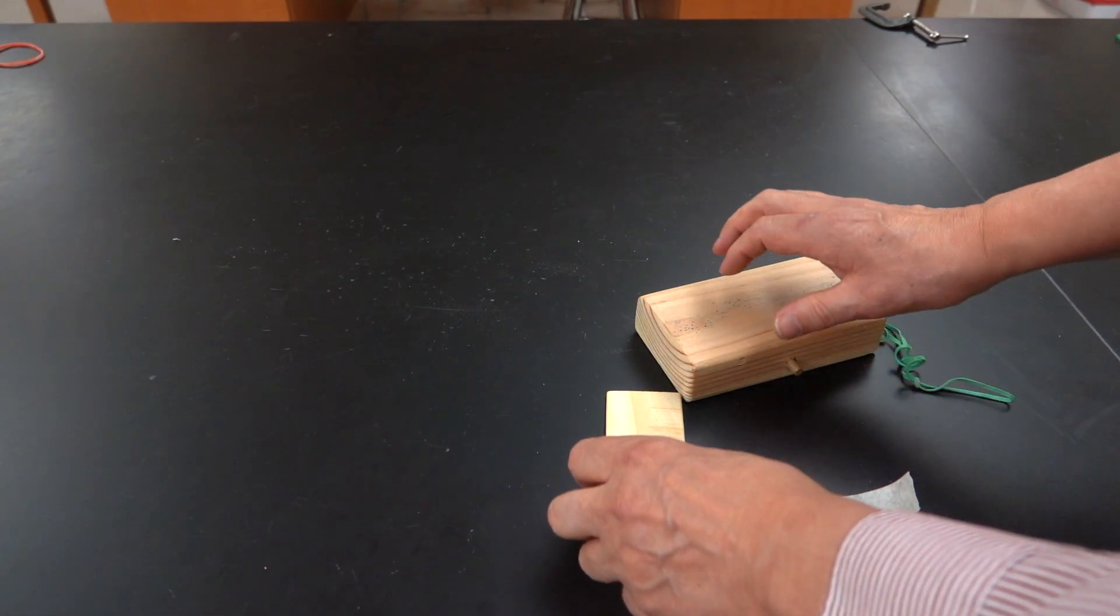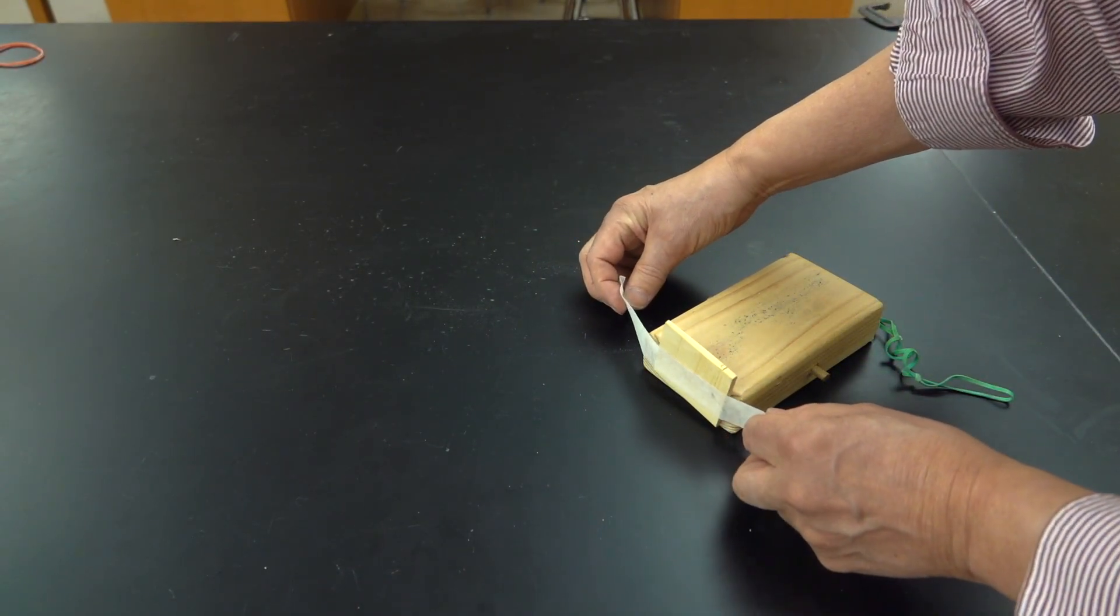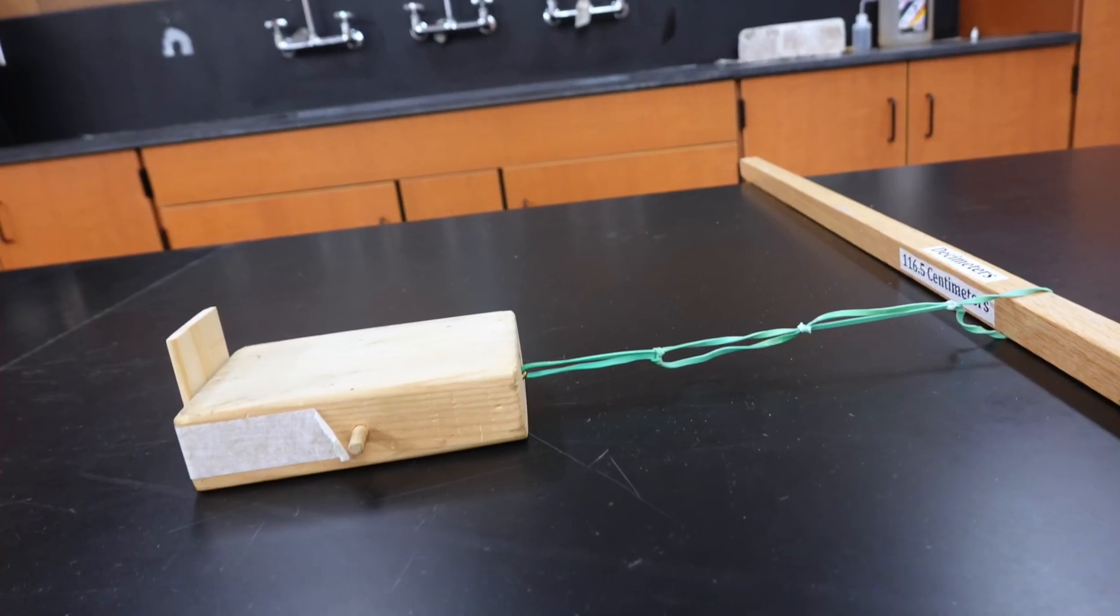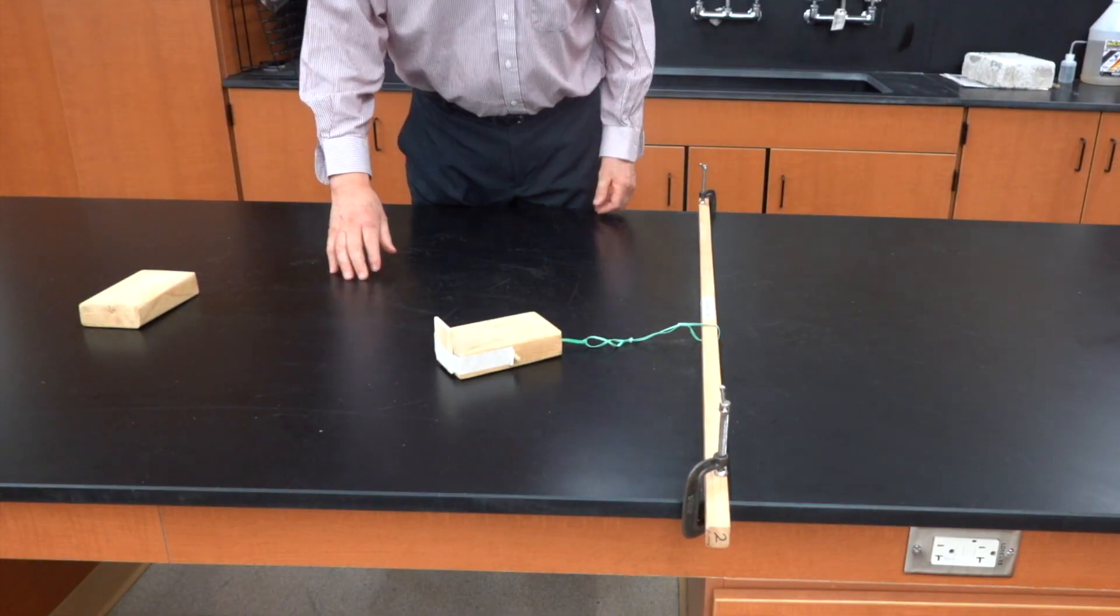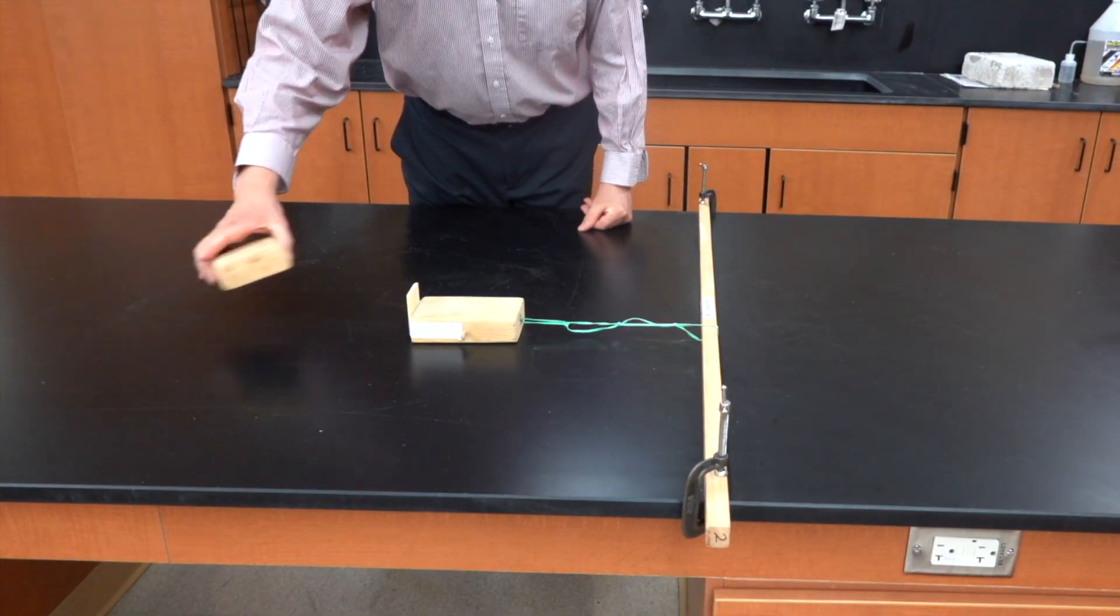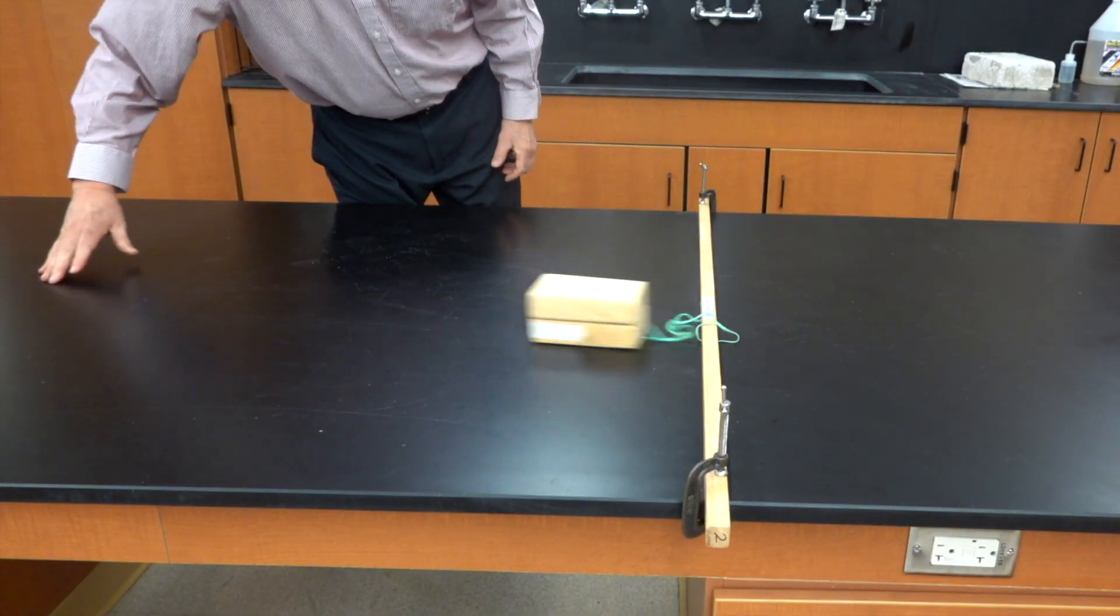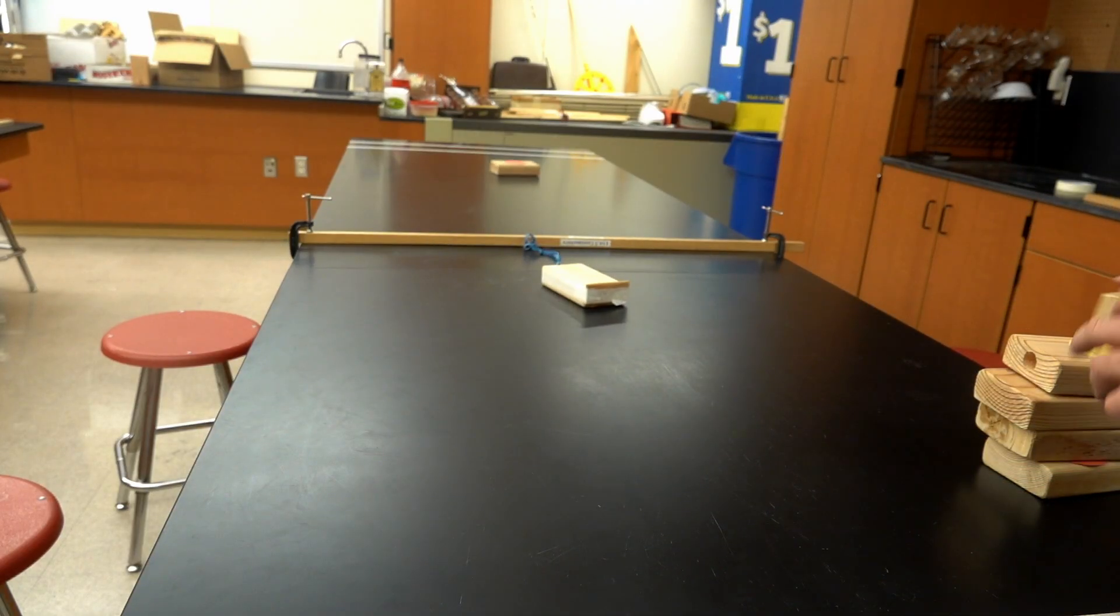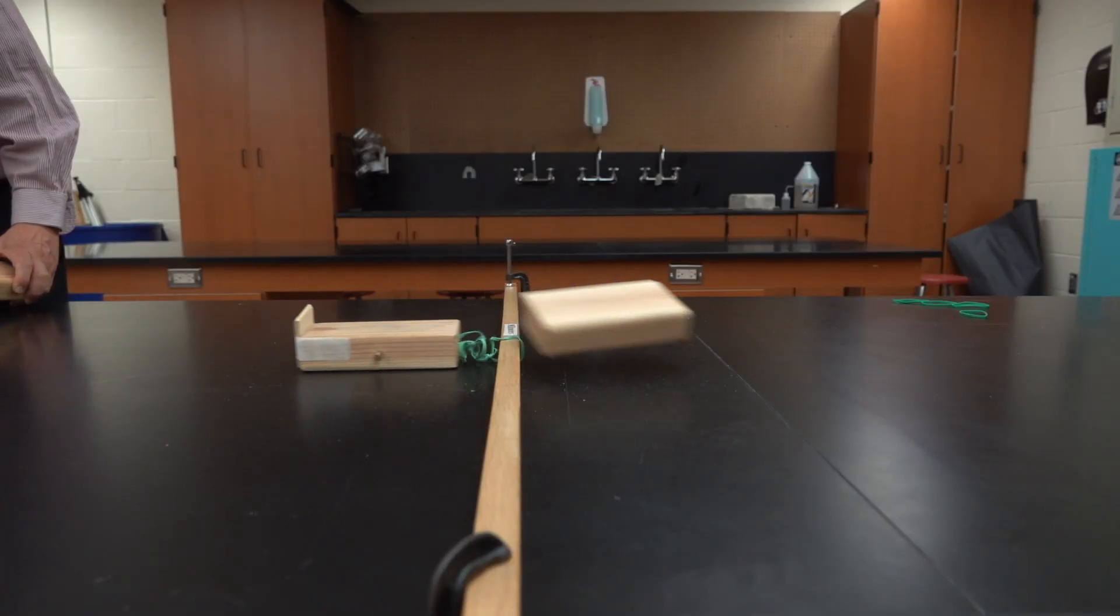To show this part we're going to add a small block to the back end of that 2x4 piece. We'll simply tape it in place. It's going to have a lip on the back side of it, which is going to allow it to push the block on top of it forward. In this case when the bottom block stops, the top block continues to move forward until friction slows down and stops it.